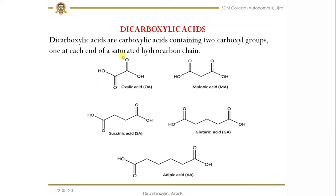These are a few examples of dicarboxylic acids. At each end of the alkyl group, there will be a carboxylic group. In oxalic acid, there is no carbon in between the two carboxylic groups. In malonic acid, there is one CH₂ group in between. Succinic acid has two CH₂ groups, glutaric acid has three carbons, and adipic acid has four carbons in between the two carboxylic groups. To remember these, use the mnemonic OHM'S GAP, where O = oxalic, H = malonic (M), C/S = succinic, G = glutaric, A = adipic, etc.